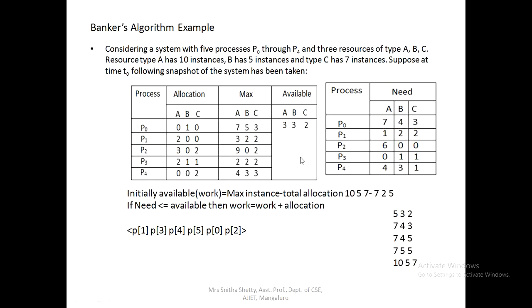Now work matrix is 5,3,2. Next we check P2: is 6,0,0 ≤ 5,3,2? No — 6 is not less than 5, condition fails. So we do not execute P2. If we allow P2 to execute, it becomes an unsafe state — meaning there is a chance of deadlock. A safe state means no deadlock; an unsafe state means there is a chance of deadlock.